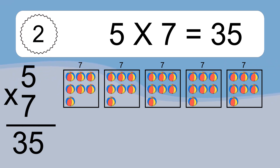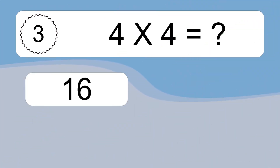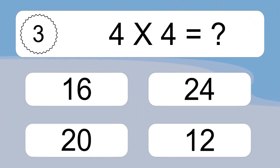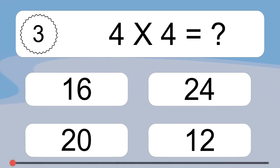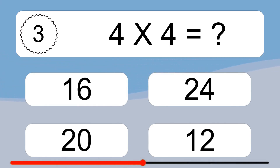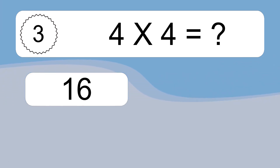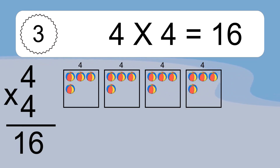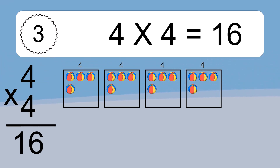you will have 5 times 7 balls. This equals 35 balls. 4 times 4 equals what? 4 times 4 equals 16. We have 4 boxes, and each box has 4 colorful balls inside. If you count all the balls in all the boxes together, you will have 4 times 4 balls. This equals 16 balls.